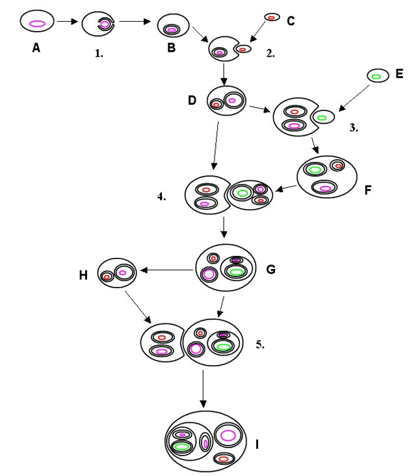Sodalis glossinidius is a secondary endosymbiont of tsetse flies that lives inter- and intracellularly in various host tissues, including the midgut and hemolymph. Phylogenetic studies have not indicated a correlation between evolution of Sodalis and tsetse. Unlike tsetse's primary symbiont Wigglesworthia, though, Sodalis has been cultured in vitro.